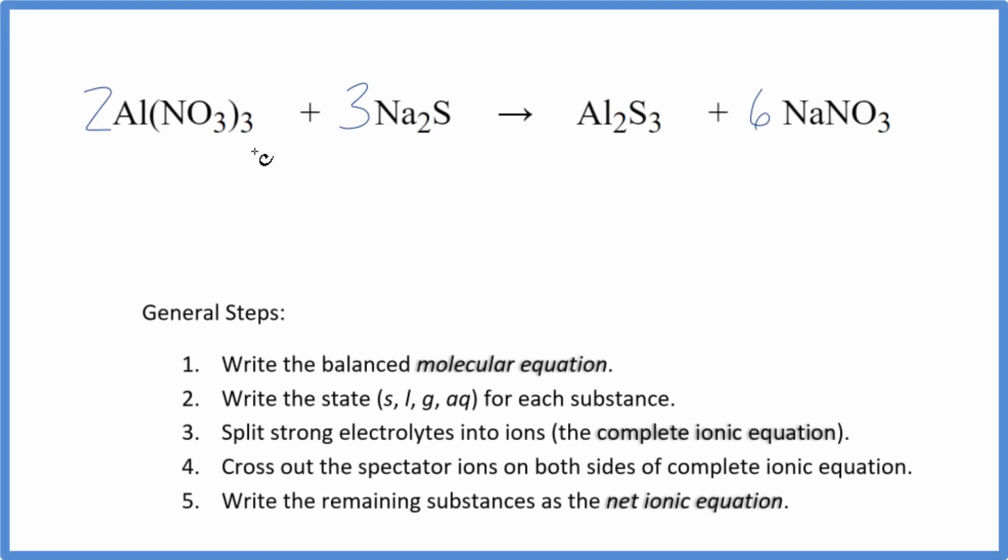In this video, we'll write the balanced net ionic equation for Al(NO3)3 plus Na2S. This is aluminum nitrate plus sodium sulfide.